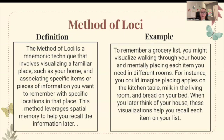Now we're going to talk about the method of Loci. The method of Loci is a mnemonic technique that involves visualizing a familiar place, such as your home, and associating specific items or pieces of information you want to remember with a specific location in that place. This method leverages spatial memory to help you recall the information later. For example, to remember a grocery list, you might visualize walking through your house and mentally placing each item in a different room — apples on the kitchen table, milk in the living room, bread on your bed. When you later think of your house, these visualizations will help you recall each item on your list. Strange, but it works.